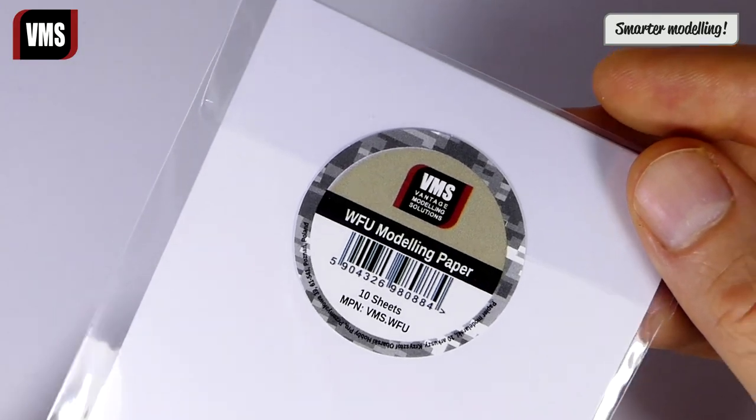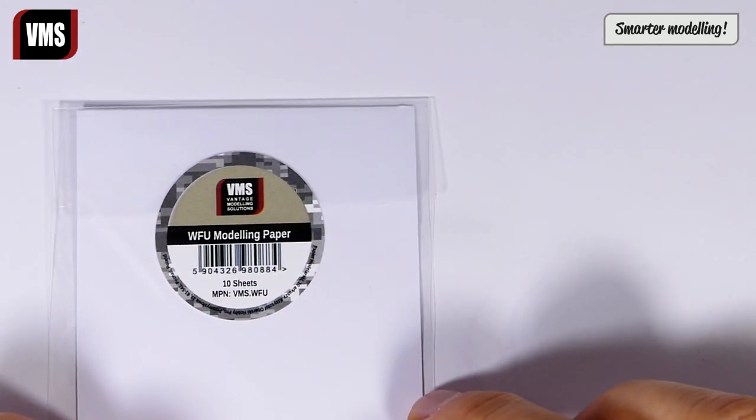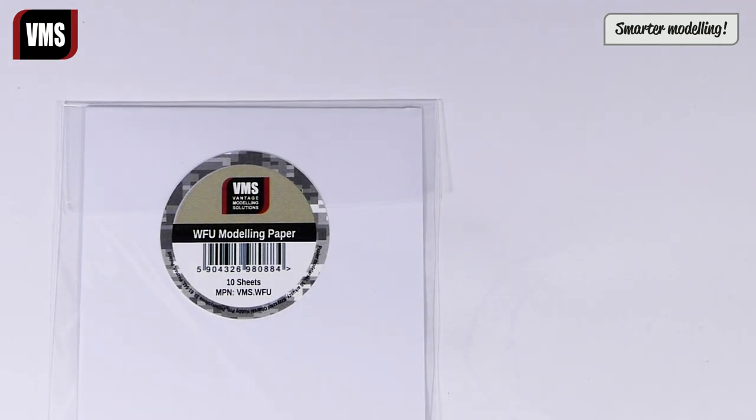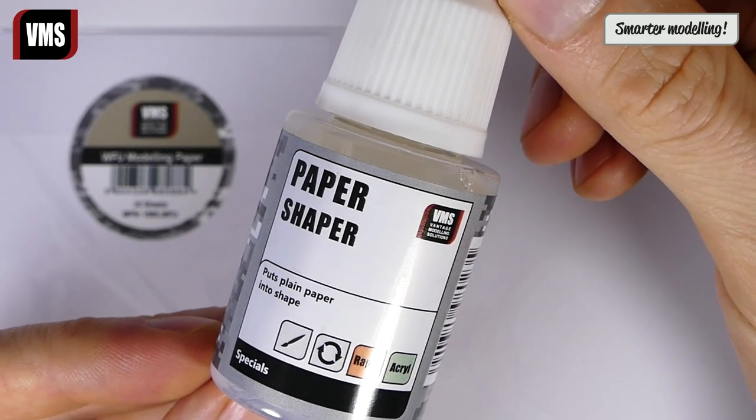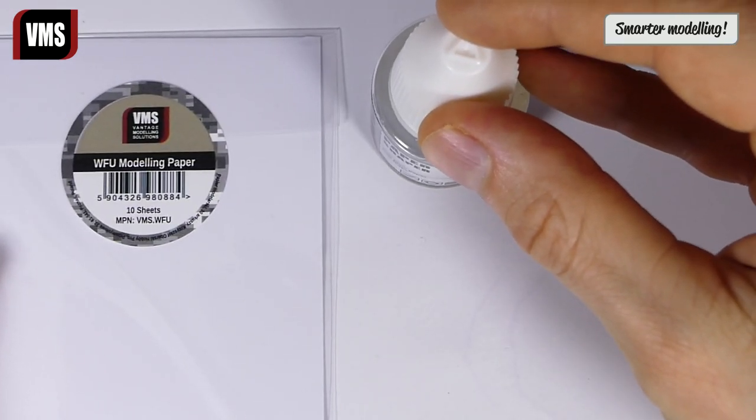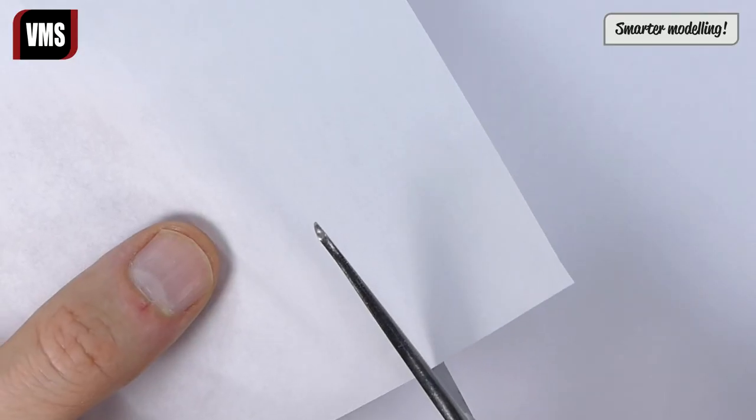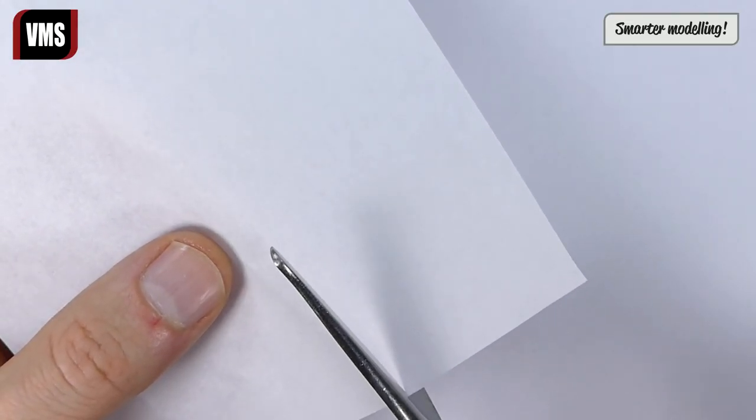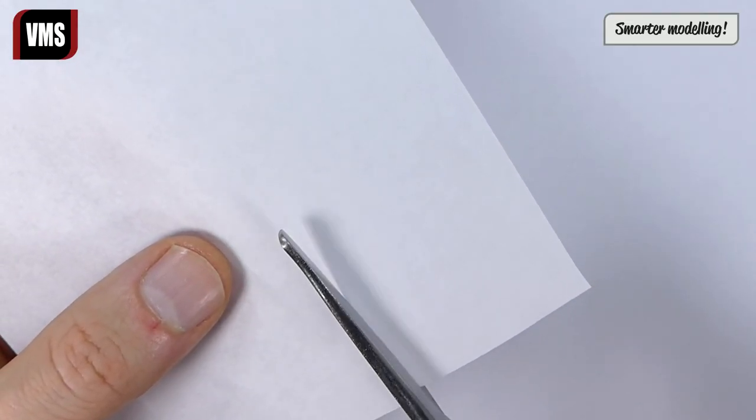For best results and easy creasing during work, we recommend you use VMS WFU modeling paper along with the paper shaper fluid. This special paper is dedicated for this purpose and yields superb end results. Start by cutting a sheet of paper which will form your canvas cover.